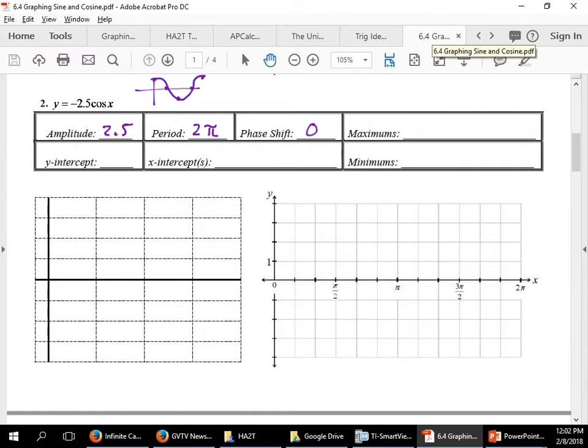So that means on our graph at 0, we're going to start down here at negative 2.5. Oh man, I forgot to do my x's. Now when I do my x's on my cheat graph, this is how you do it.